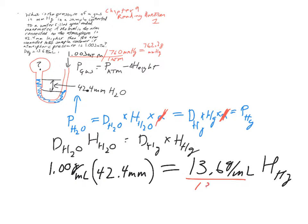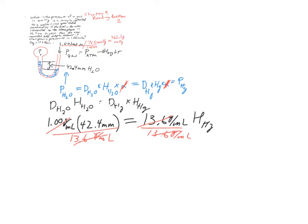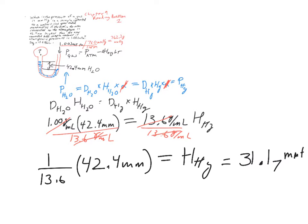We're going to divide both sides by 13.6. That gives us 1 over 13.6 times 42.4 millimeters equals the height of our mercury. 42.4 divided by 13.6 gives me 3.117 millimeters of mercury.